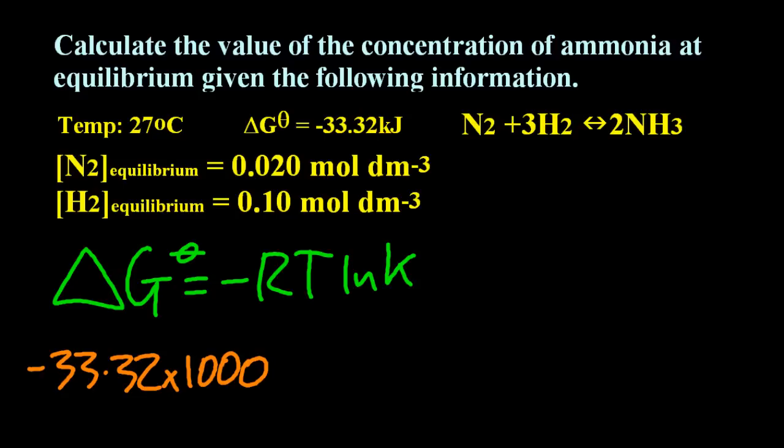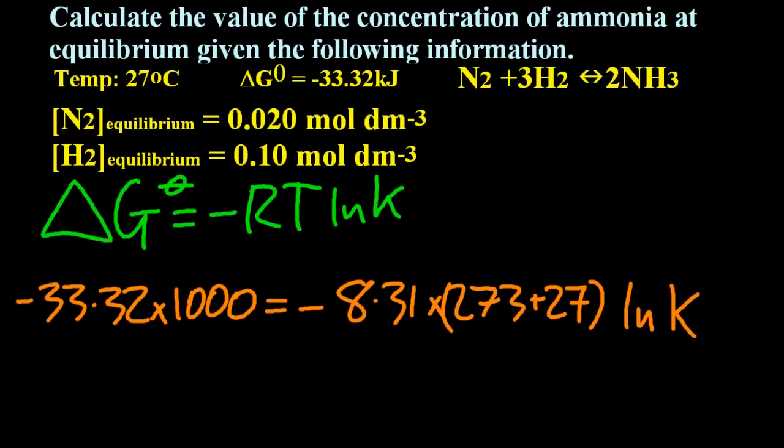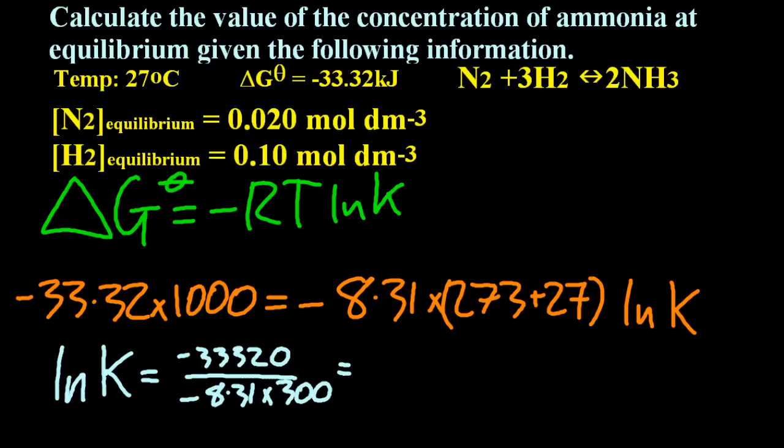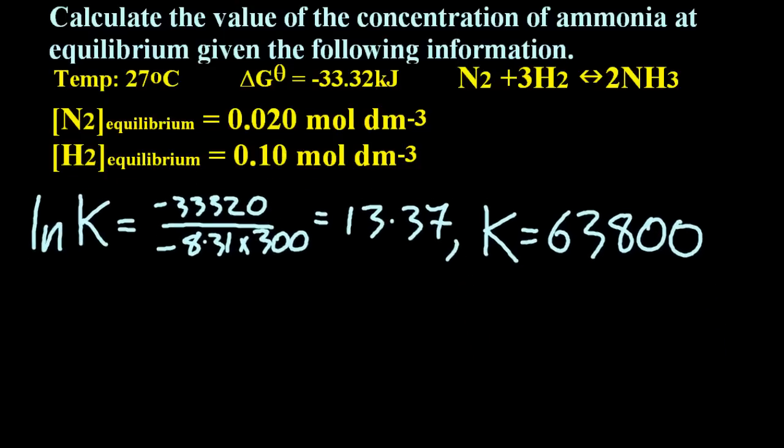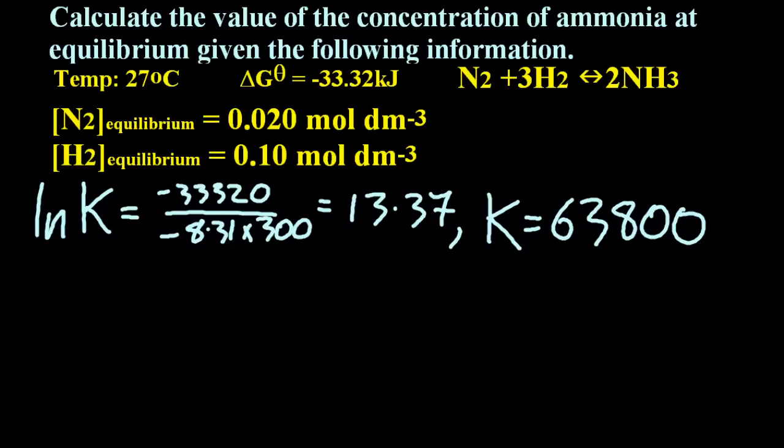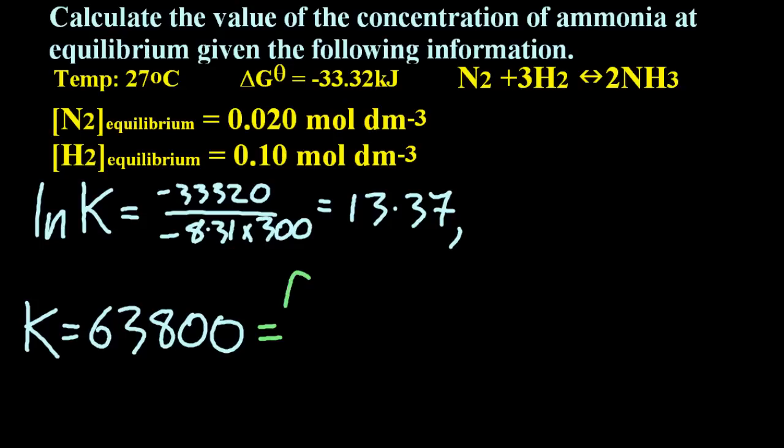Alrighty, I'm going to stick to joules. So I've multiplied my delta G by 1000. Temperature in Kelvin. And solve for ln K and then K. So that gives me ln K of 13.37. But I really want K. So on your calculator press inverse ln. And you get K is, well, I'm going to keep three sig figs because my question has two sig figs. And I'm going to keep one extra and then round off at the end.